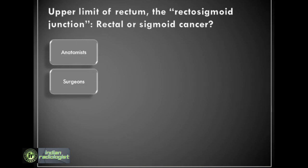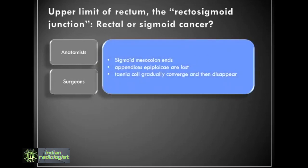The upper limit of rectum is the rectosigmoid junction. The location and the landmarks for the rectosigmoid junction are controversial — it is defined differently by anatomists, surgeons, and radiologists, with differing opinions even among radiologists. According to anatomists, the rectosigmoid junction is the point where the sigmoid mesocolon ends, the appendices epiploicae are lost, and the taenia coli gradually converge and then disappear. These features may be seen over a considerable length and not at a single point.